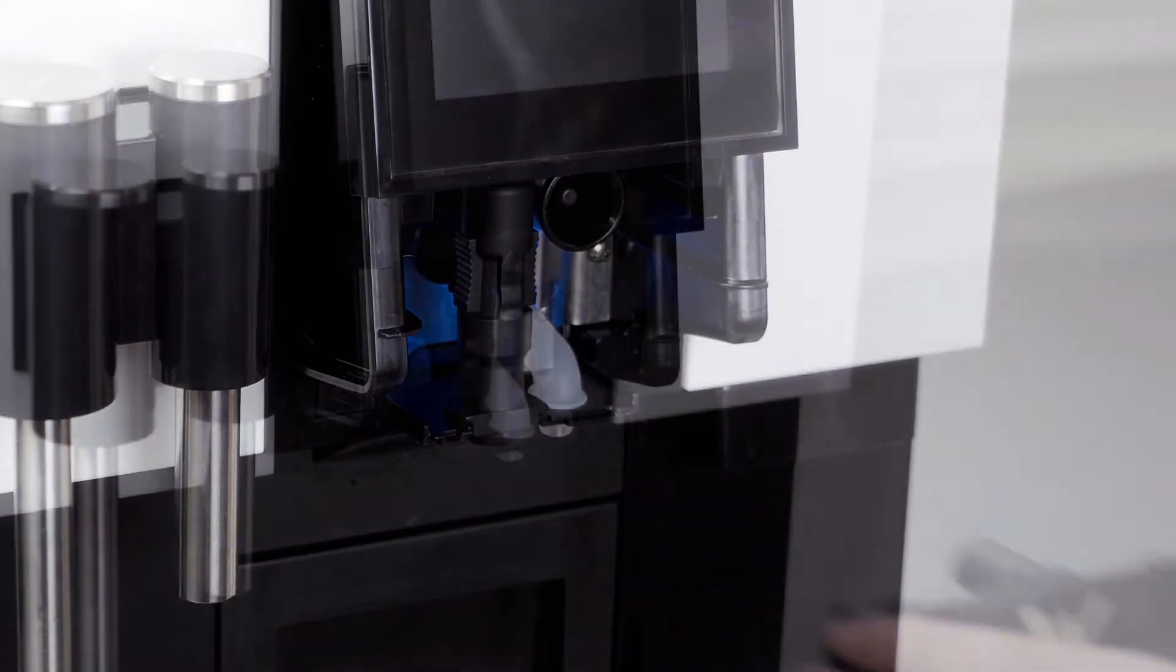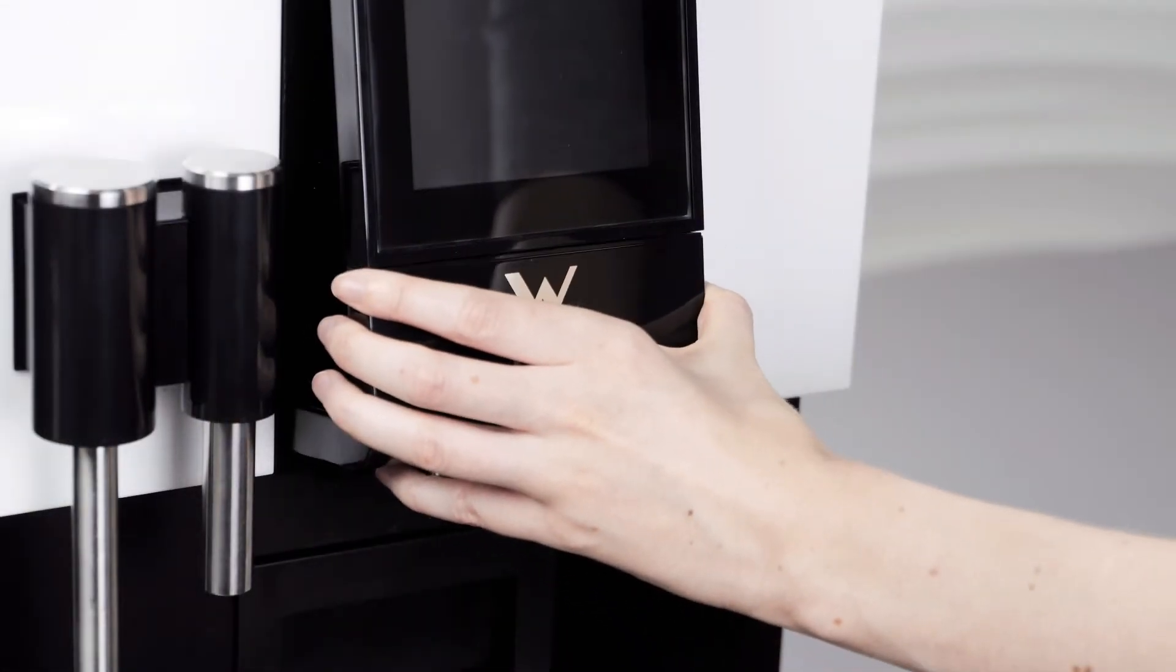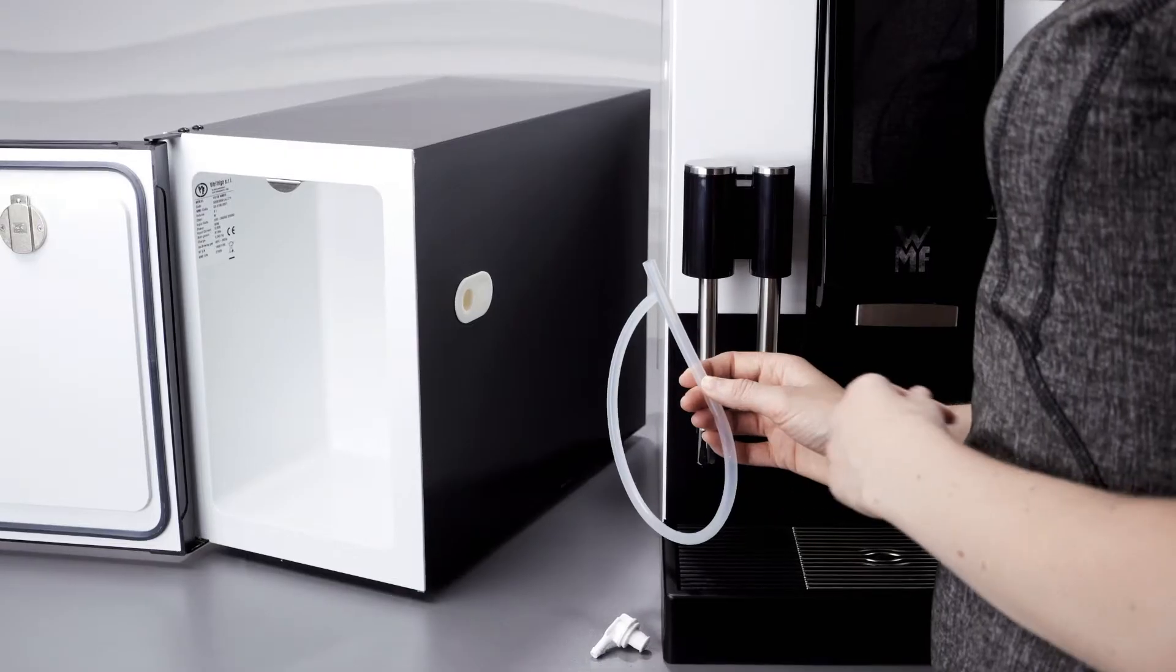Next, reposition the milk foamer including milk nozzle and attach the cover with a coffee spout to the machine.